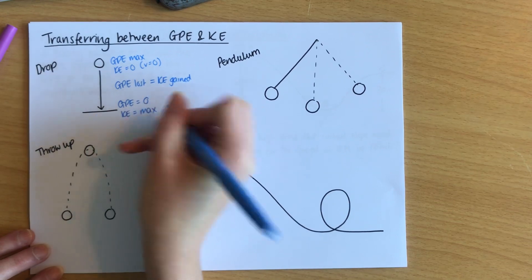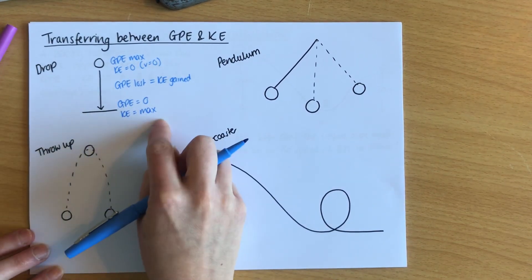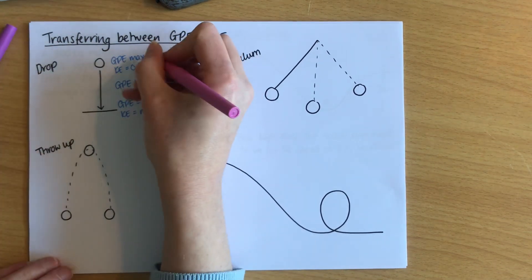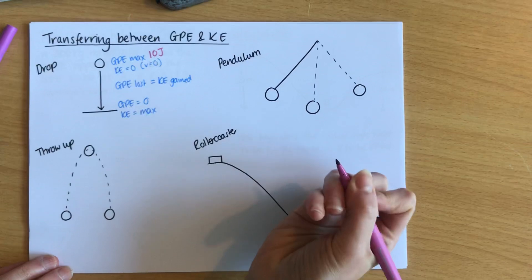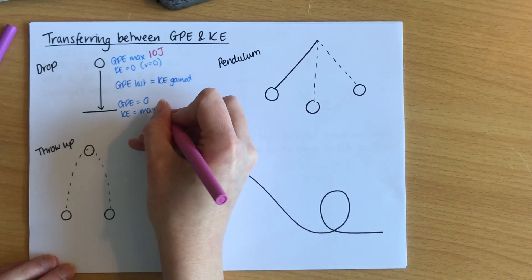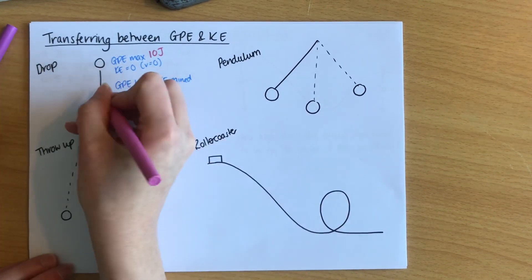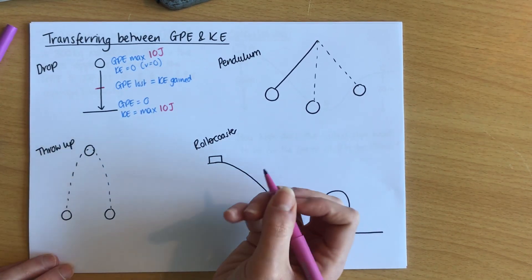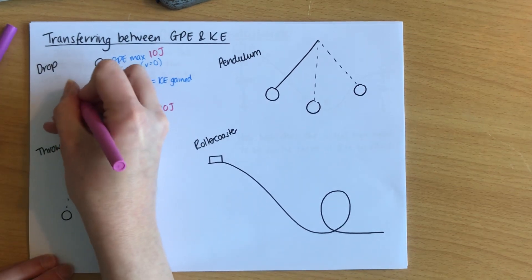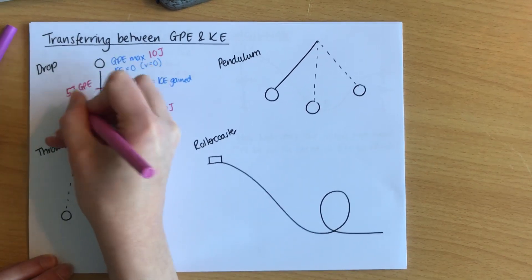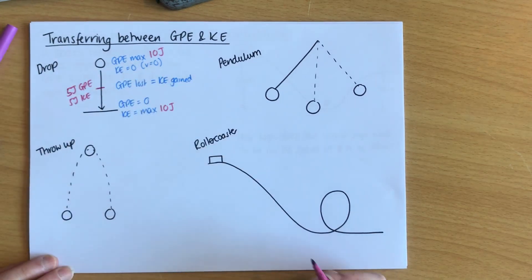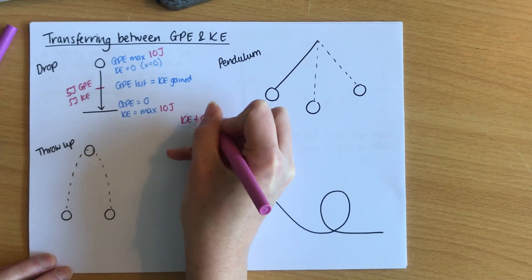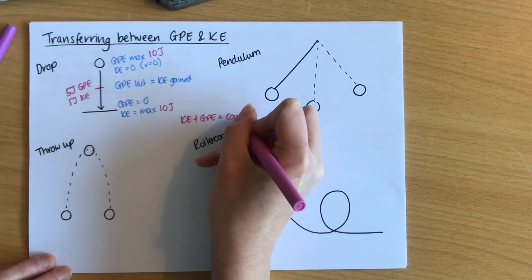So the kinetic energy just before it hits the ground — the faster it's going to go — will equal the maximum. If we put some numbers in, let's say I had GPE of 10 joules to start with. That means at the bottom I'd have 10 joules of kinetic energy. In the middle, I'd actually have 5 joules of each — 5 joules of GPE and 5 joules of kinetic energy. You can notice that the sum of KE plus GPE is equal to a constant value.